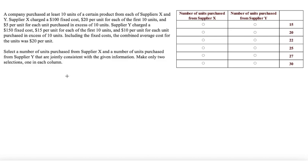This is a tricky TPA official question. Let's see how we'll solve it quickly. A company purchased at least 10 units of a certain product from each of suppliers X and Y. So we have two suppliers X and Y and the units purchased were at least 10. So I would say the units were greater than or equal to 10 in each case.